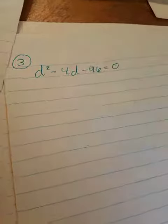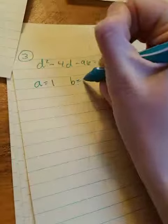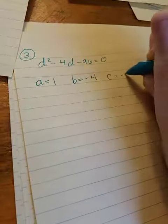All right, number three on the 10-6 worksheet was requested. Everything's on one side, so here we go. A is 1, B is negative 4, and C is negative 196.